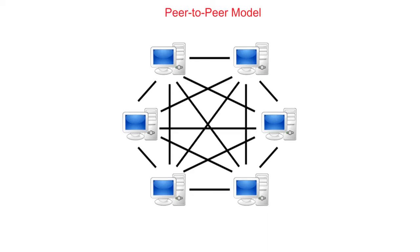In a peer-to-peer setup, all terminals or computers have equal status. There is no powerful central server. Each computer in this setup acts as both a client and a server — it simply depends on the circumstances. As well as being quite a cheap architecture to implement, it also lends itself very well to use over the internet.